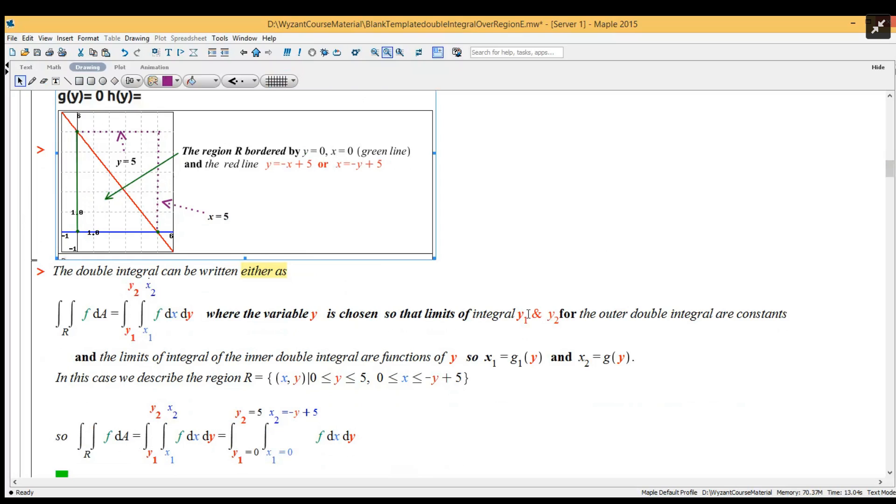And now the variable y is chosen so that the limits of integral y₁ and y₂ for the outer double integral are constants.